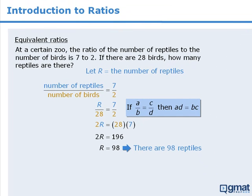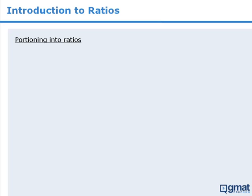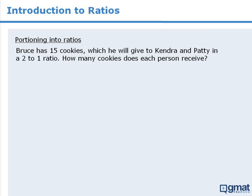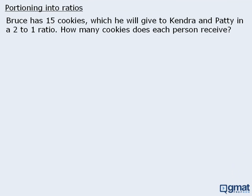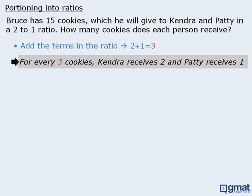The other question type involving ratios requires us to portion quantities into certain ratios. For example, Bruce has 15 cookies and plans to distribute them to Kendra and Patty in a two to one ratio — meaning for every two cookies Kendra receives, Patty receives one. To solve this, we first add the terms in the ratio: two plus one equals three. This tells us that for every three cookies, Kendra receives two and Patty receives one.